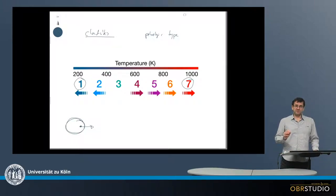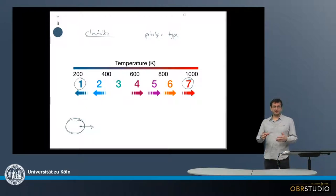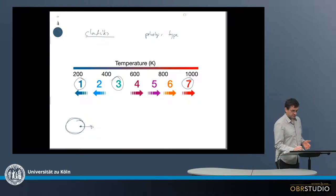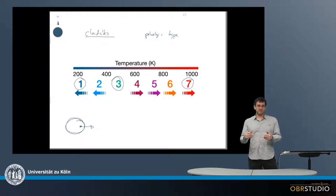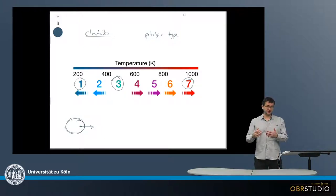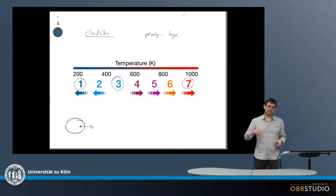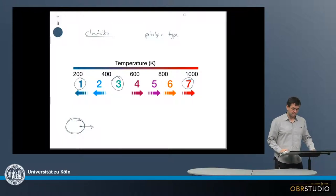The most primitive chondrites that did not experience any secondary alteration are of type three. These are the meteorites we actually want to look at because they contain very primitive material that is unchanged on the parent body, which means it is as it formed in the protoplanetary disc, which is what we want to study.